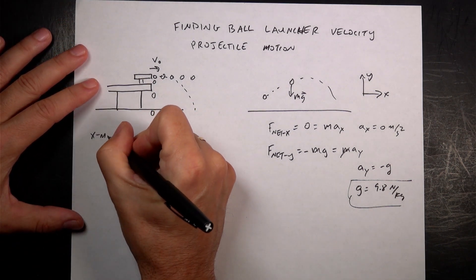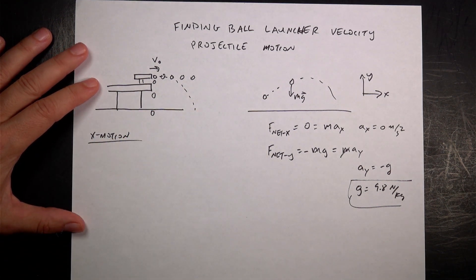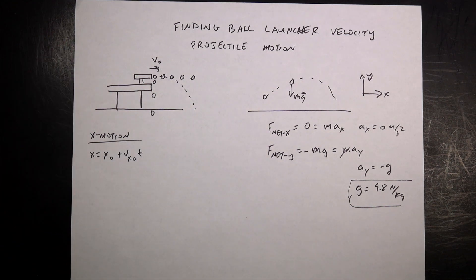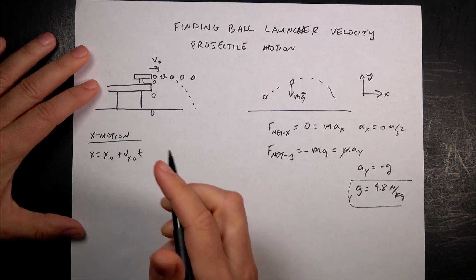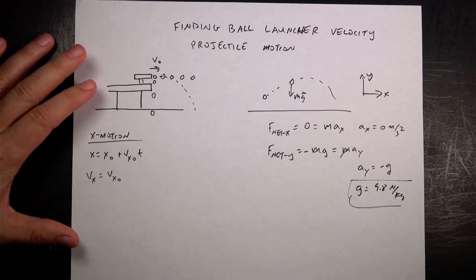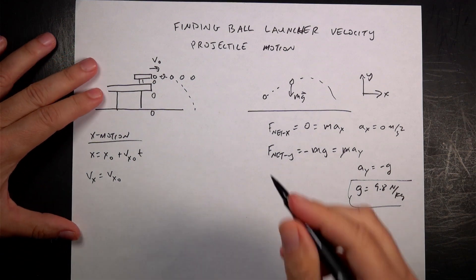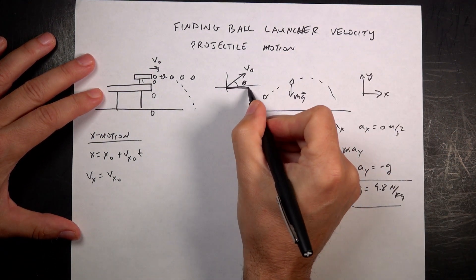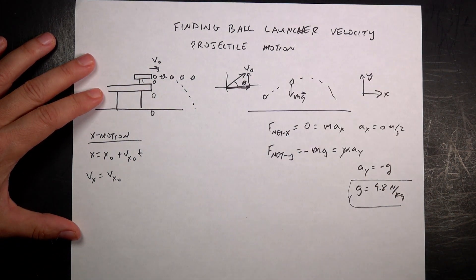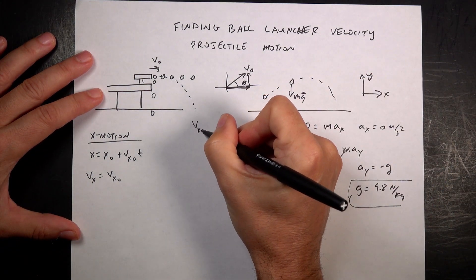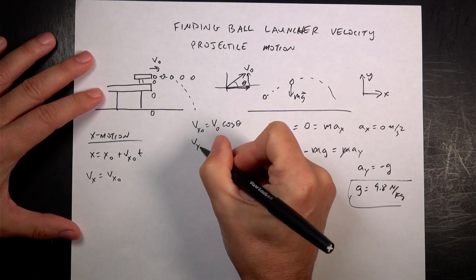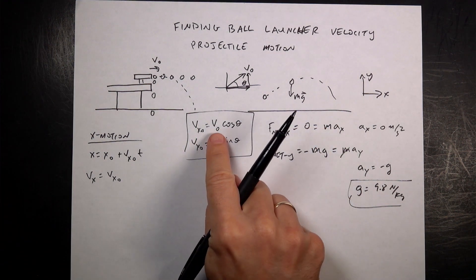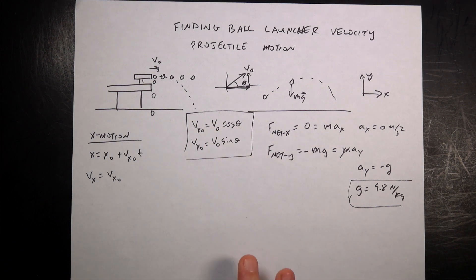In the x direction I have one kinematic equation: x = x₀ + vx₀·t. Because the acceleration in the x direction is zero, there's no additional term. I could also write vx = vx₀, but that's not very useful. If you launch at some angle theta with some velocity v₀, then the x velocity is the adjacent component: vx₀ = v₀·cos(θ), and the y velocity is the vertical component: vy₀ = v₀·sin(θ), assuming you measure the angle from the horizontal axis.